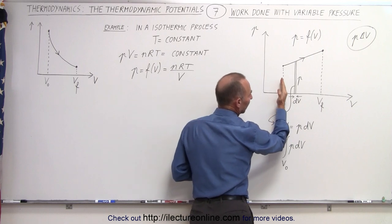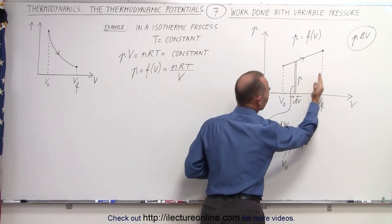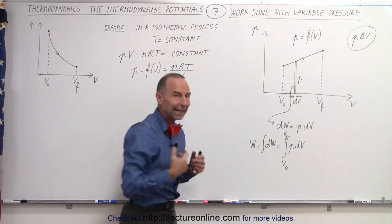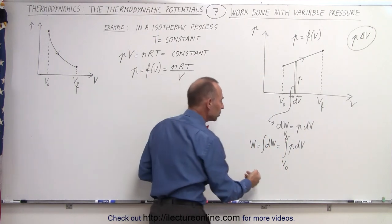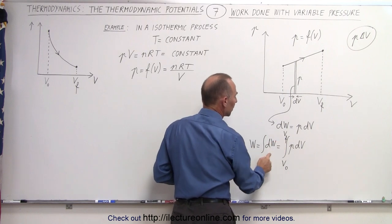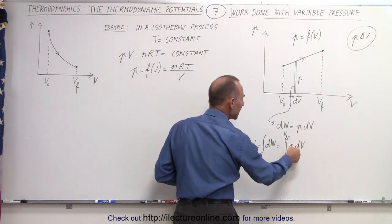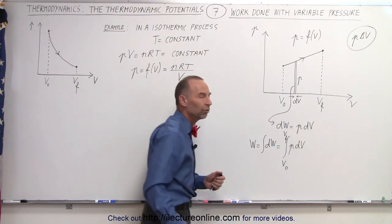And then if we want to do the work done by the entire change going from here to here, we simply add up all the small dws, which is basically integrating the dw from the initial volume to the final volume. So that becomes P times dV, where P is a function of the volume.